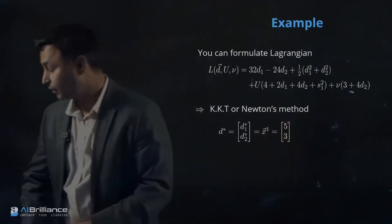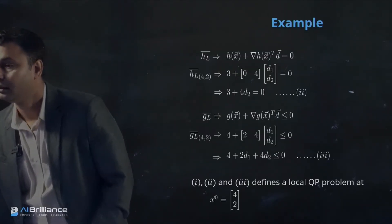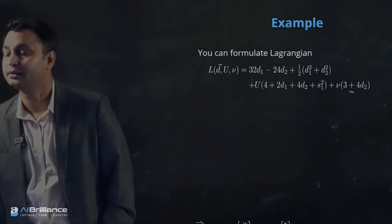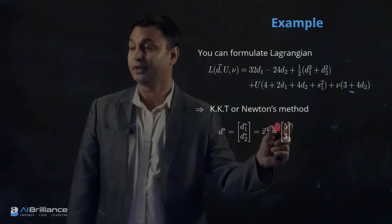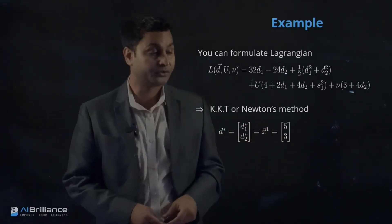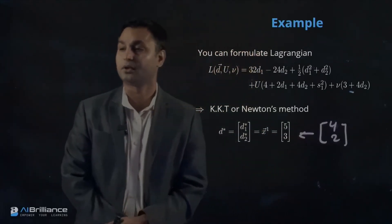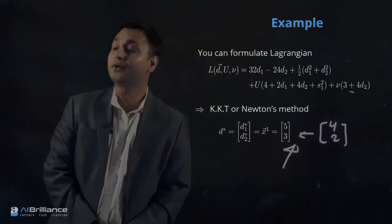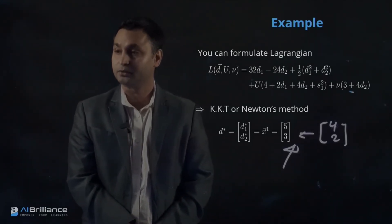So x0 was (4, 2), and by solving the local quadratic program and applying Newton's method, the optimal solution D1=5, D2=3 gives us x1 = (5, 3). In the next iteration, we reformulate another quadratic program at the x1 location using the same approach shown previously. That yields a new Lagrangian; we again apply Newton's method to get new D values, which become x2. This is how we move iteratively.